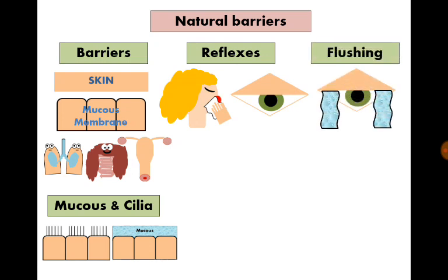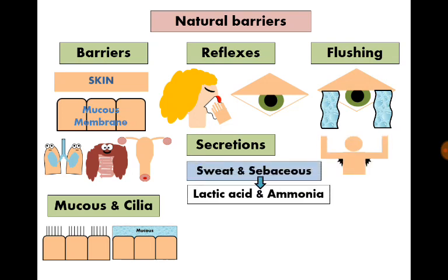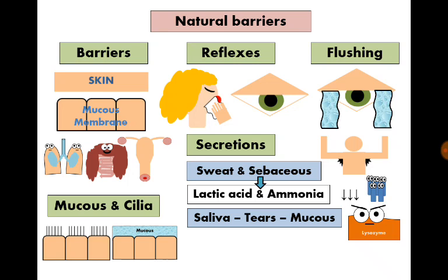The flushing action of body secretions like tears and urine help our body get rid of foreign organisms. Sweat and sebaceous secretions contain lactic acid and ammonia that inhibit bacterial growth. Saliva, tears, and mucous secretions contain lysozymes that kill bacteria. The stomach and vagina have an acidic environment, which also inhibits bacterial growth.